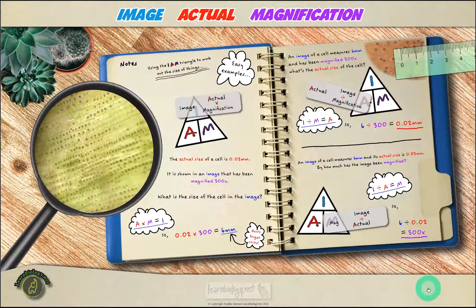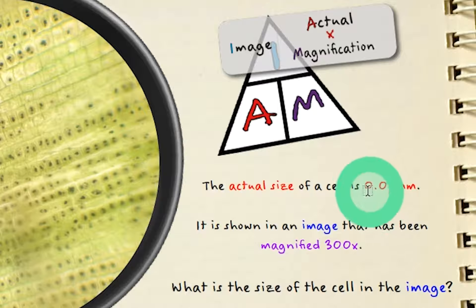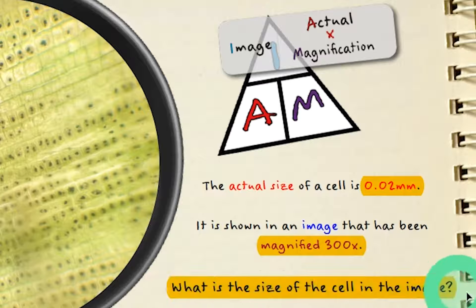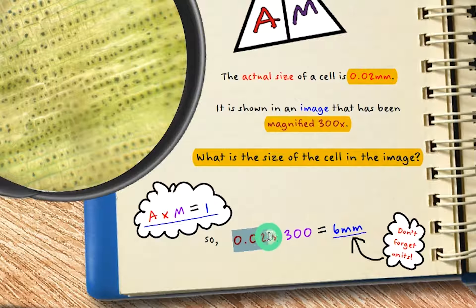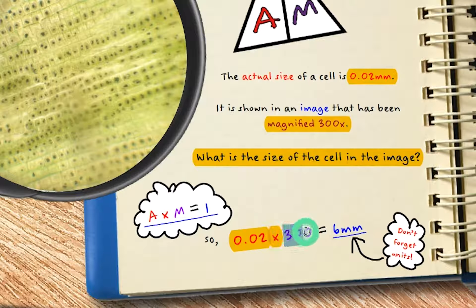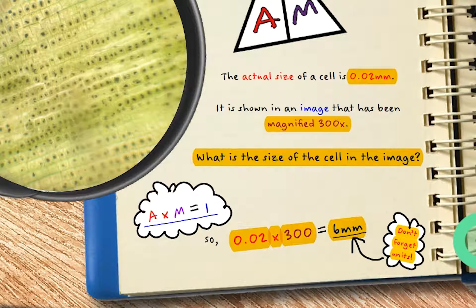So let's take a look at some really basic examples. If the actual size of a cell is 0.02 millimeters and it is shown in an image that has been magnified 300 times, what is the size of the cell in the image? Well, for this we can see that we've been given the actual size and the magnification. So we can cover the I because that's what we're working out, which leaves us with the actual multiplied by the magnification. So we have 0.02 multiplied by 300, which gives us 6 millimeters. Now don't forget those units and always work in the units that are given in the exam. Later you may need to convert millimeters into micrometers or micrometers into nanometers or whatever, but we'll get to conversions later.